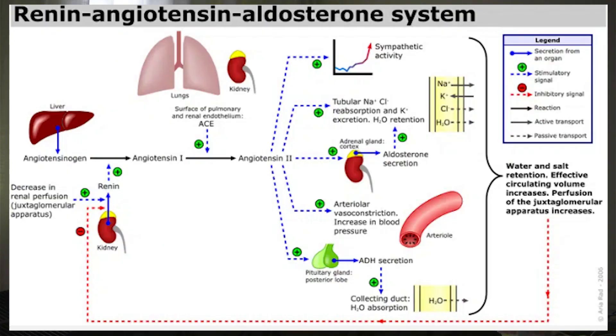Moving on to one of the most important parts: testosterone and its effect on blood pressure. This has to do with testosterone's effect on the RAAS system — the renin, angiotensin, and aldosterone system. What has been demonstrated with the use of testosterone is that it increases angiotensin 2 levels, and it's postulated it does this via increasing renin expression. Renin is responsible for converting angiotensinogen, which is produced by the liver, to angiotensin 1.